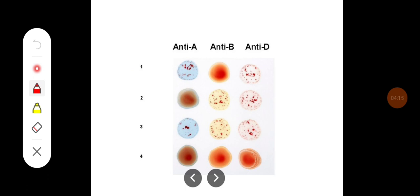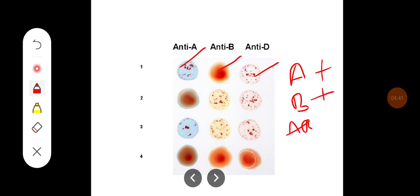If there is agglutination with anti-sera A, no agglutination with anti-B, and agglutination with anti-D, then the blood group is A positive. If there is no agglutination with anti-sera A but agglutination with anti-B and anti-D, it is B positive. If agglutination occurs with all three antisera, the blood group is AB positive. If agglutination occurs with none of the antisera, the blood group is O negative.